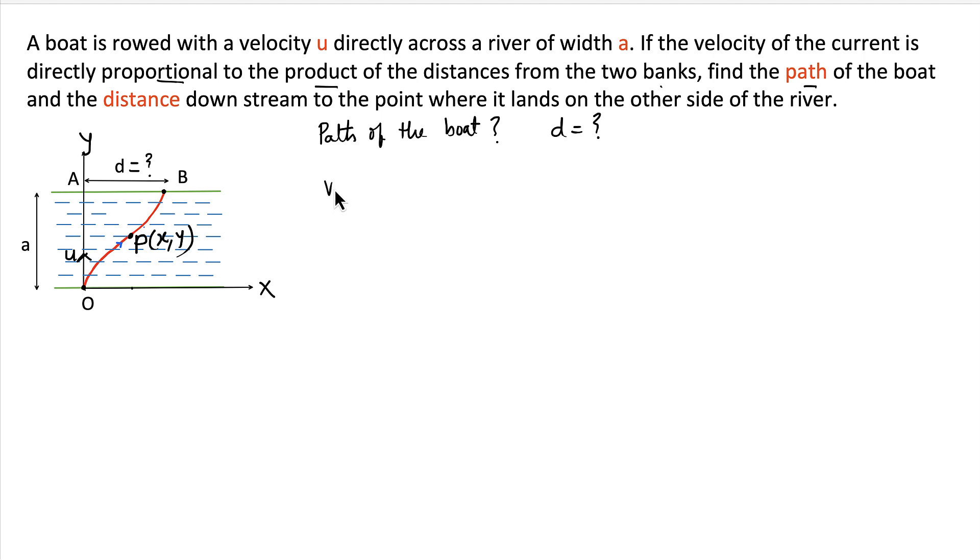So what is the velocity of current? The velocity of the current is directly proportional to the distances from the two banks. So what is the distance from the two banks here? This one is y, then this one is a minus y. So it will be some constant K times y times (a minus y). And velocity of current is in x direction always, so we can write it as dx/dt.